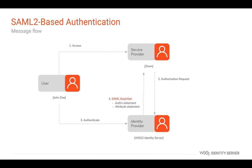Let's consider an authentication flow that is service provider initiated, or end user initiated, by accessing the end application. When the user John Doe attempts to access the service provider, it generates an authentication request and sends it to the identity provider requesting the user's identity information. The authentication request is an XML message defined in the SAML specification that contains the service provider's information and additional requirements to be obtained from the identity provider.